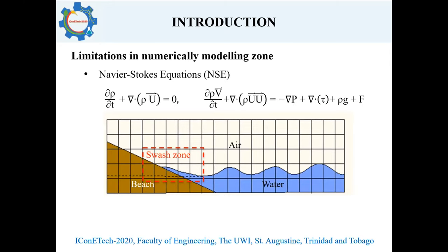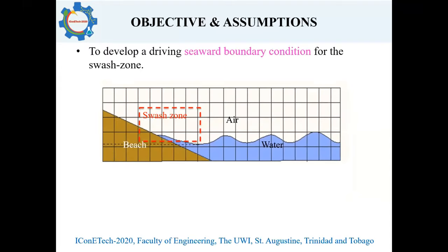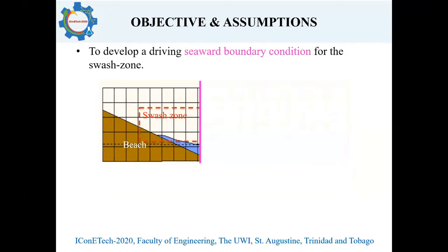The obvious issue is that while the Swash Zone itself may be relatively small, the numerical approach requires that the modeling area be increased to include the offshore region, which directly corresponds to increased computational cost. The research at hand is geared towards reducing this computational cost by developing a driving seaward boundary condition for the Swash Zone. This boundary condition incorporates the influence of offshore waves, eliminating the need to solve the Navier-Stokes equations beyond the zone. As shown by the pink line in the diagram, it drastically reduces the domain size and computational cost.